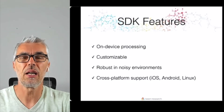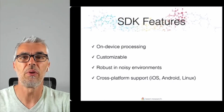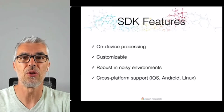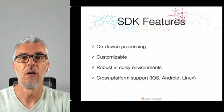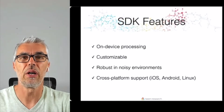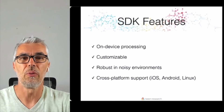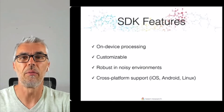Keen ASR SDK is based on a state-of-the-art deep neural network-based engine, which provides excellent performance in noisy environments and with accented speech. The SDK runs on several mobile platforms: iOS, Android, and Linux. We also provide Unity support via a custom plugin.